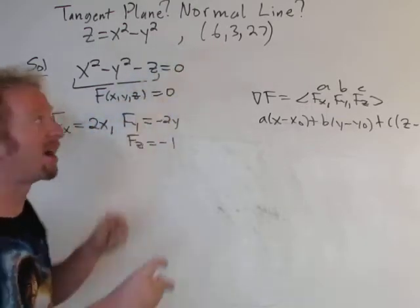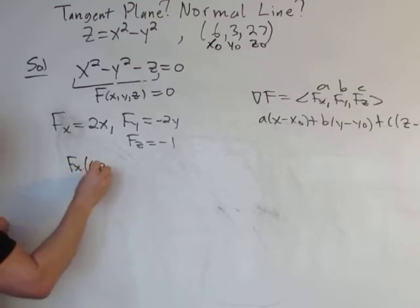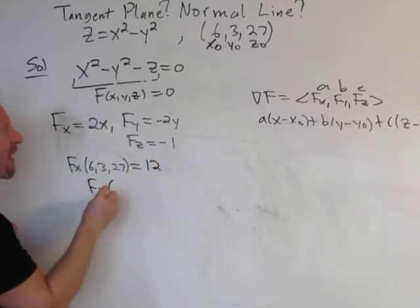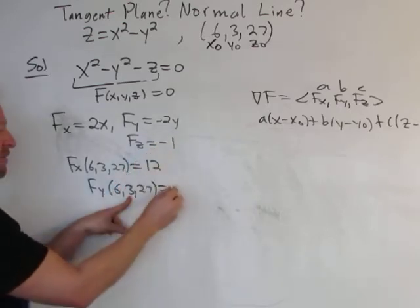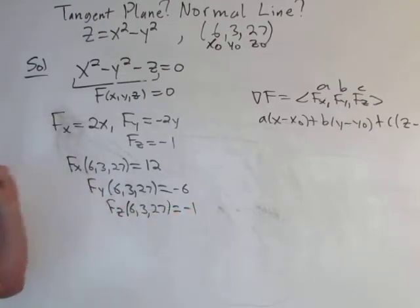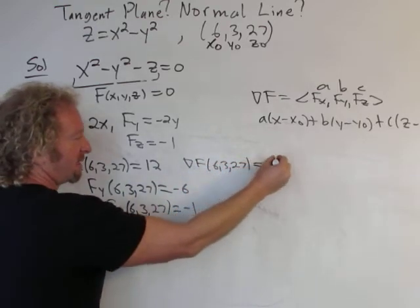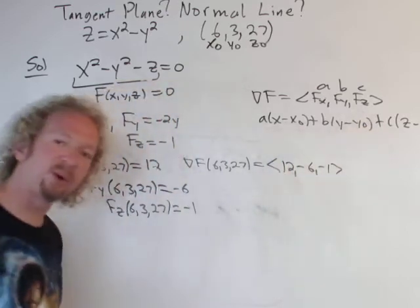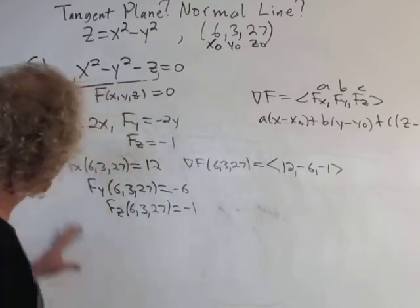We plug everything in now. So here we have our x₀, that's our x₀, y₀, z₀, so we have to plug these guys in here. So Fₓ at (6, 3, 27), that's going to be 2 times 6, that's 12. Fᵧ at (6, 3, 27), so y is 3, so we get negative 2 times 3, so negative 6. And then Fᵤ at (6, 3, 27), that's going to be negative 1. So our normal vector for our plane is going to have these components. That's the gradient vector at (6, 3, 27), that's the vector with the components 12, negative 6, negative 1. So now this is going to be our a, b, c in the equation of the plane, and this is also going to be parallel to our normal line, so we'll use that to find some symmetric equations.